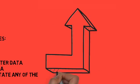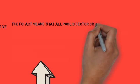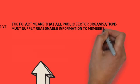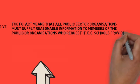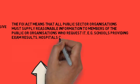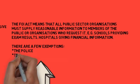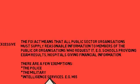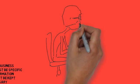Moving on to the Freedom of Information Act. This means that all public sector organisations — schools, hospitals, any government departments — must supply any reasonable data or information when it's requested by the public or other organisations. A good example: a hospital has been forced to give their financial information to a journalist. There are a few exemptions: the police, the military, and the intelligence services such as MI5, who do not have to provide all information requested in order to maintain security for our country.